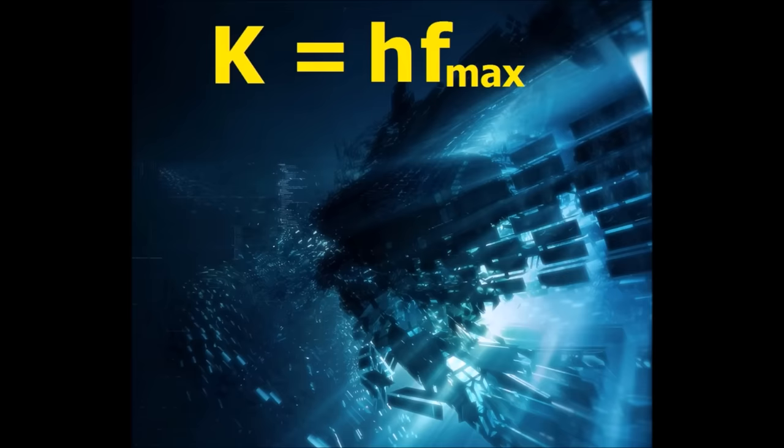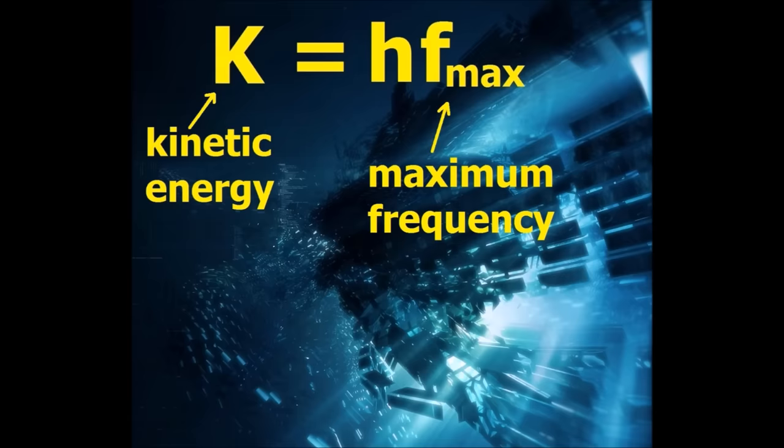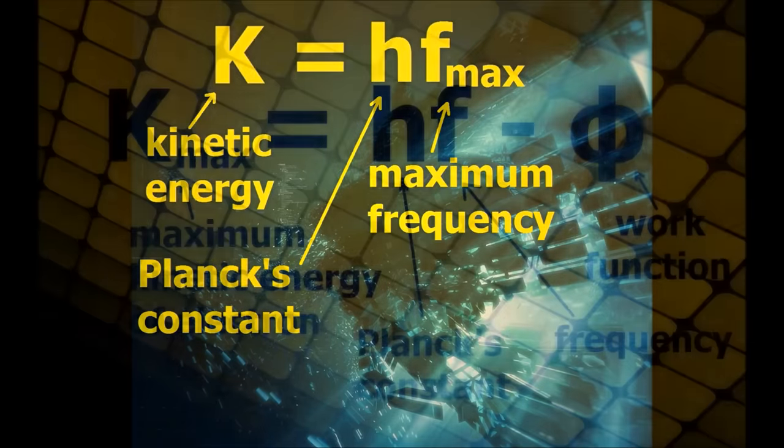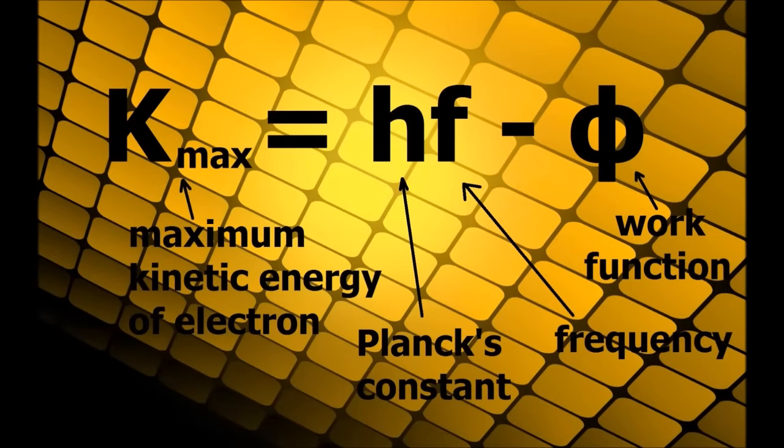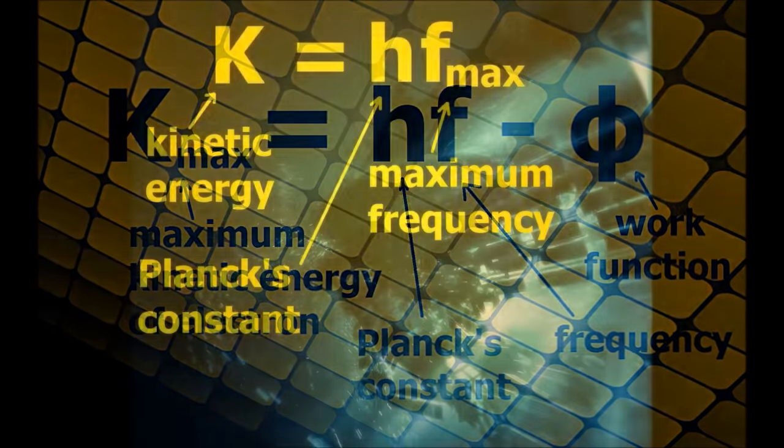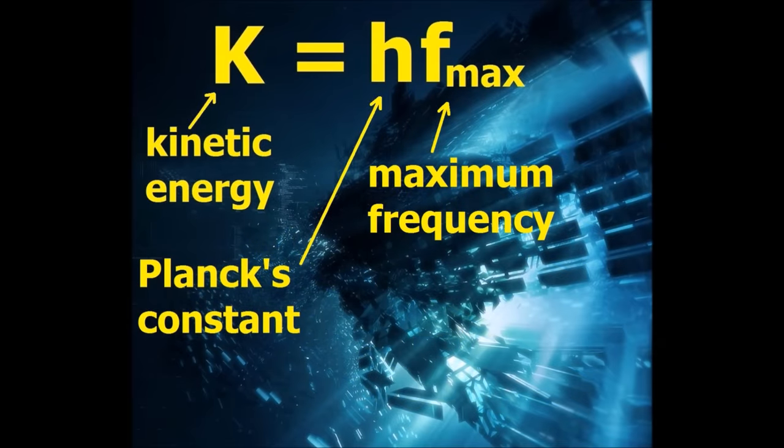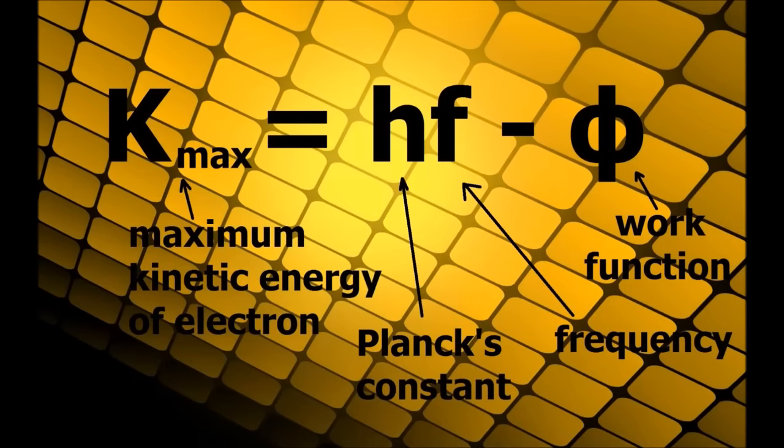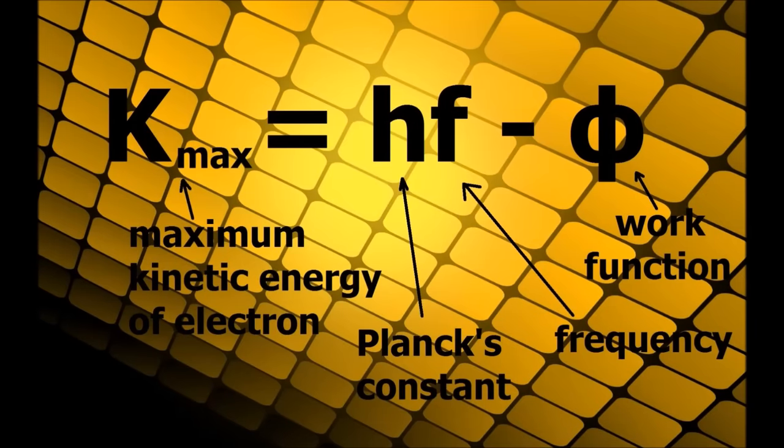The equation for Bremsstrahlung is k equals h times f max, where k is the kinetic energy of the incoming electron, f max is the maximum frequency of light emitted, and h, as usual, is Planck's constant. Notice that this equation is almost identical to that of the photoelectric effect. This makes perfect sense since it's the same process, just in reverse. You may also notice that in the case of Bremsstrahlung, there is no work function. That's because the value for it is so small compared to the energies being dealt with that it can be neglected altogether. But in principle, these equations, which represent the absorption and emission of light, are both based on the underlying principle that light behaves like a particle.